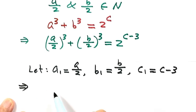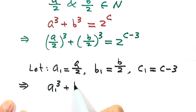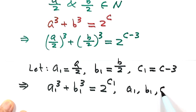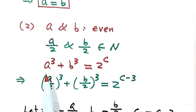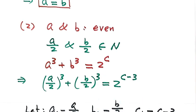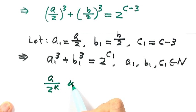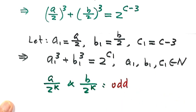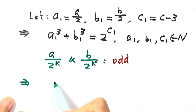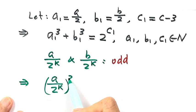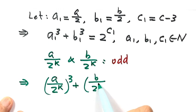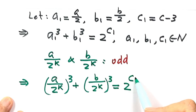Then we have A₁³ + B₁³ equals 2 to the power of C₁, where A₁, B₁, C₁ are natural numbers. This equation is in the same form as the original given condition. We repeat this procedure K times until A divided by 2^K and B divided by 2^K are both odd numbers, giving (A/2^K)³ + (B/2^K)³ equals 2 to the power of C − 3K.